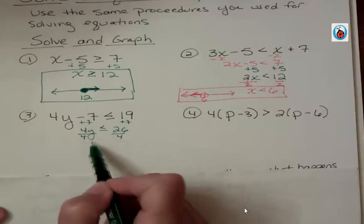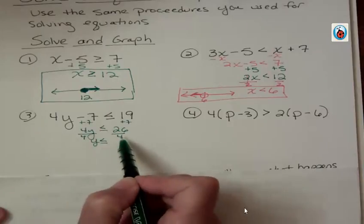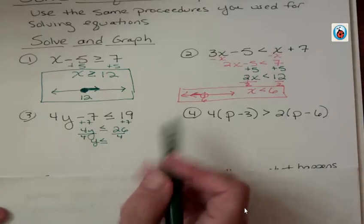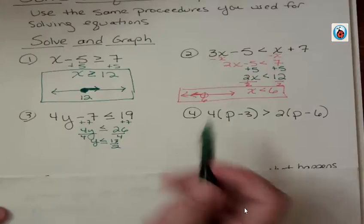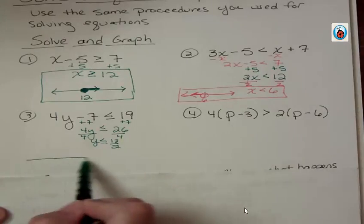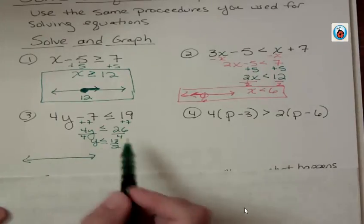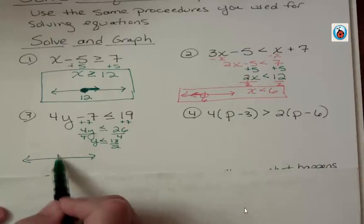Divide both sides by 4. And you get y is less than or equal to, I'm going to reduce that to 13 halves. I'm not going to change it into a fraction or decimal, I mean a decimal or a mixed number. Just leave it in that form. I'm talking about 13 halves. So that's the number that I would put onto my line.